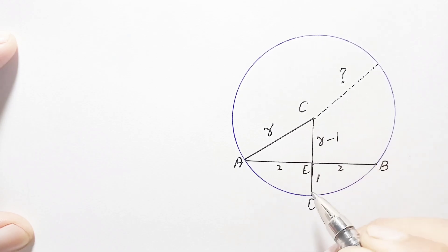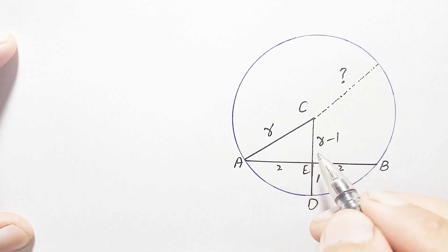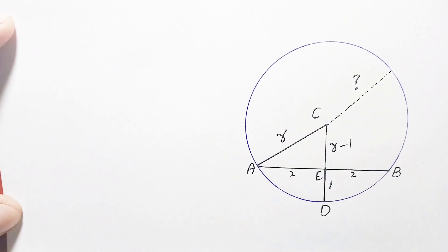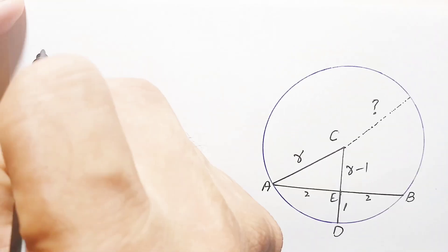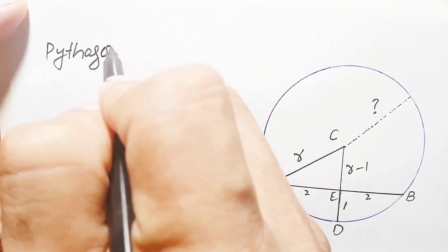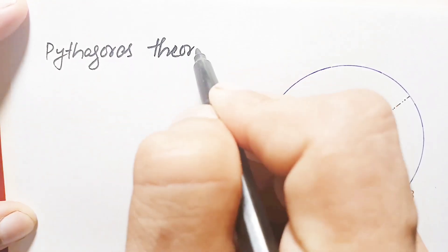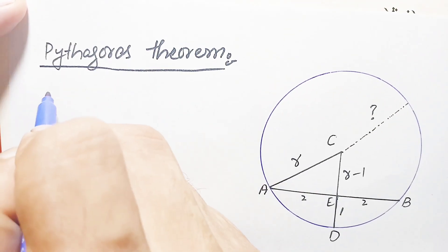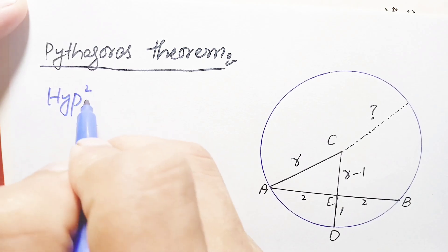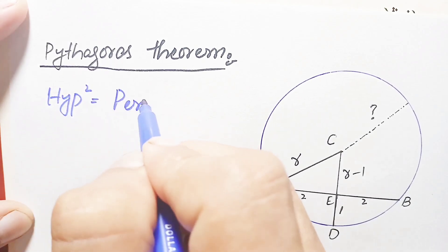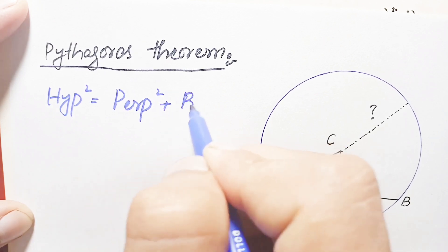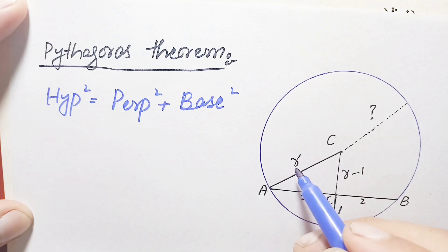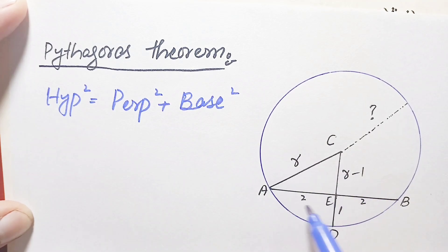Now we have the three sides of the right angle triangle, so we will use the Pythagorean theorem to find the radius. The Pythagorean theorem states that hypotenuse squared is equal to perpendicular squared plus base squared.